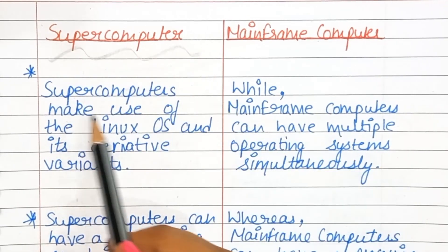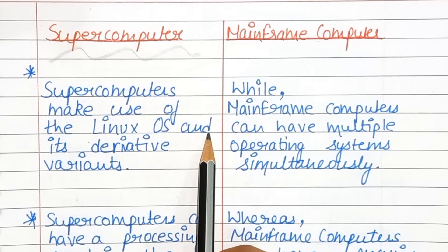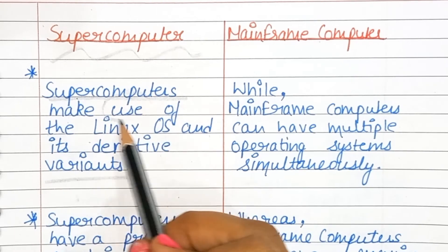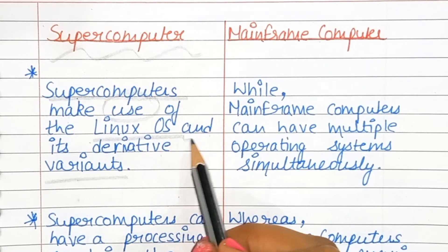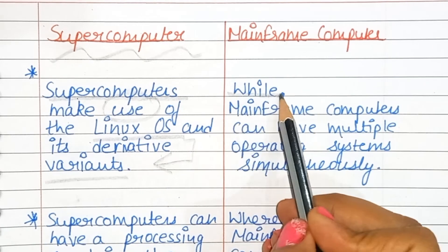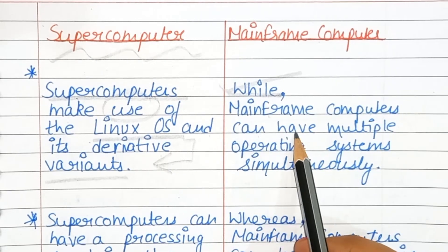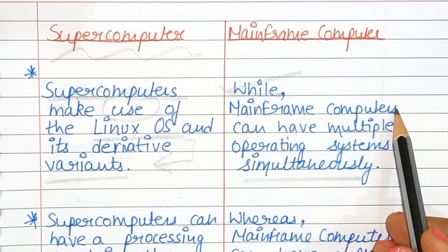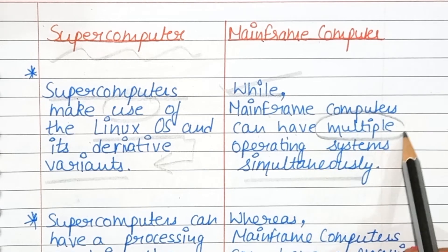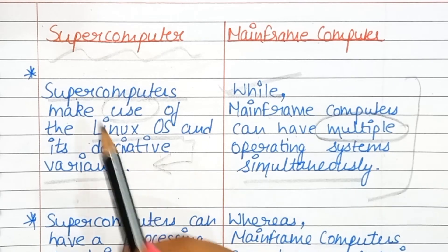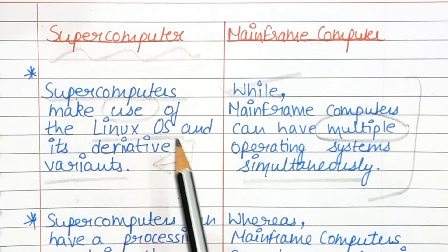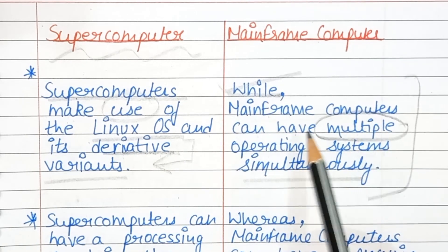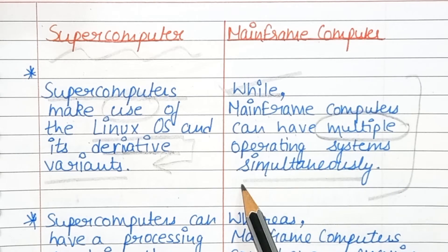The next difference is the operating system. Supercomputers make use of the Linux operating system and its derivative variants, while mainframe computers can have multiple operating systems simultaneously.